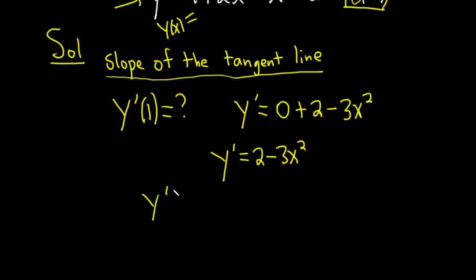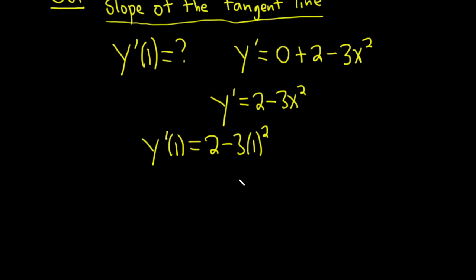So y prime of 1 is equal to 2 minus 3 times 1 squared. So this is equal to 2 minus 3 because 1 squared is 1 and 3 times 1 is 3. And so this is equal to negative 1. So that is our slope.